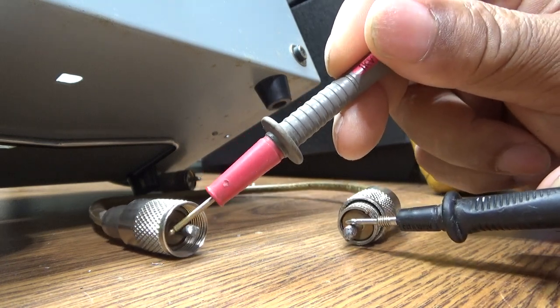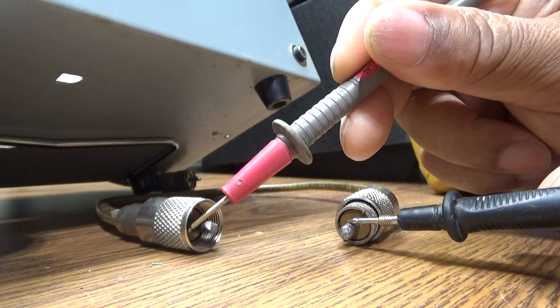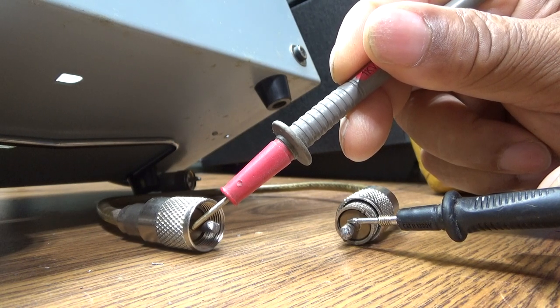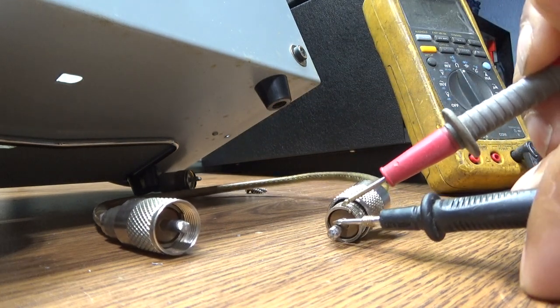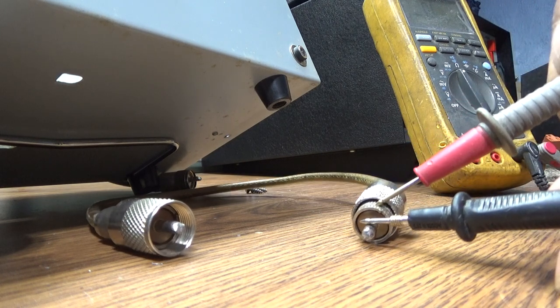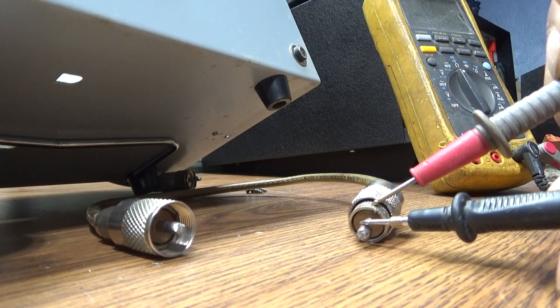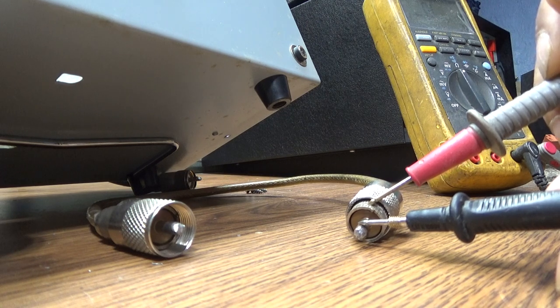You should have continuity from pin to pin here. There you go. You got continuity from pin to pin. And then if you go from the pin to the ground here, you should not have continuity. There should be nothing from here to here. So that jumper has got to be good. Right? I got the three continuity tests.